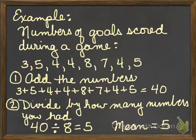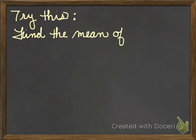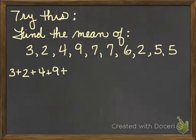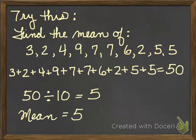You try one. Find the mean of this set of numbers: three, two, four, nine, seven, seven, six, two, five, and five. When we add these numbers together, hopefully you got 50. There were 10 numbers, so we divide by 10. And that gives us a mean of five, an average of five for these numbers.